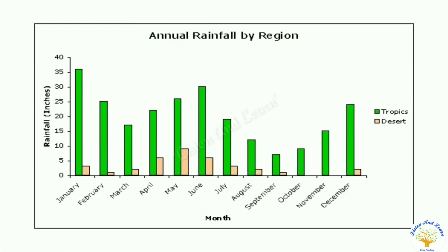A graph showing annual rainfall by region in the months of January to December. Read it and draw it.